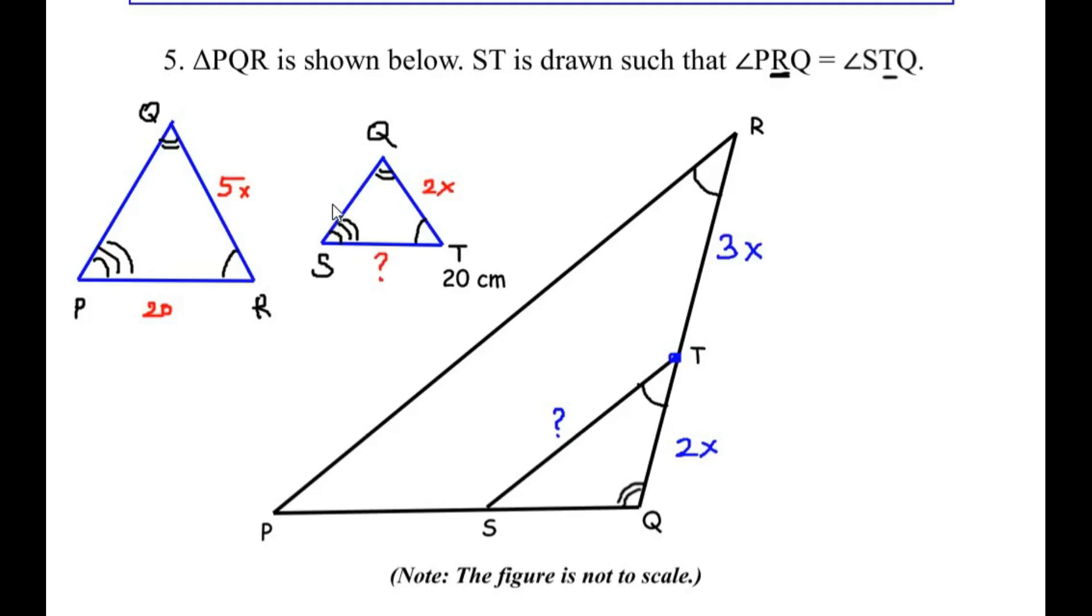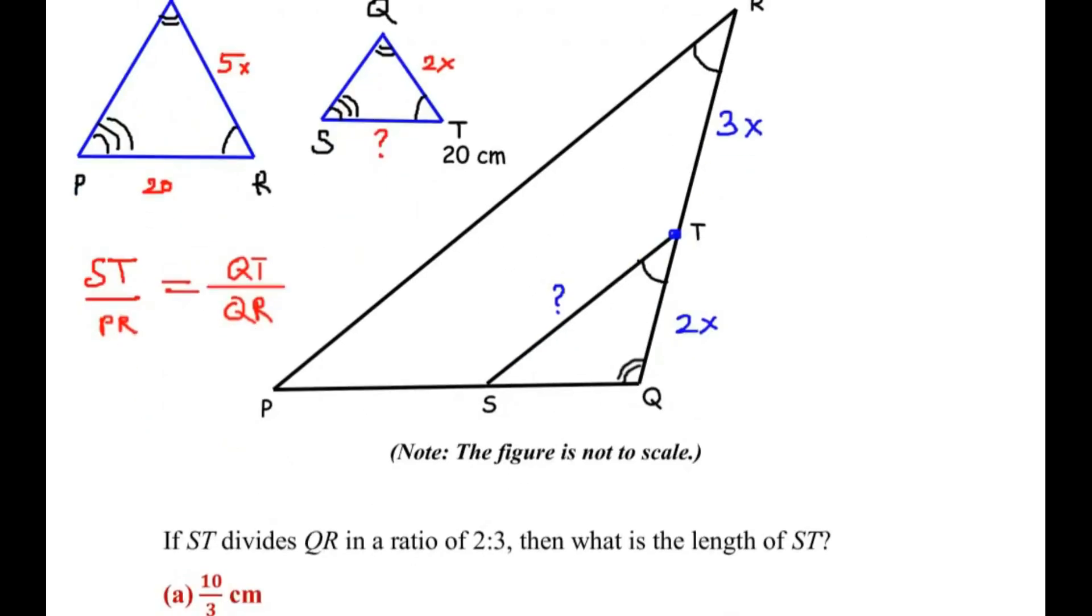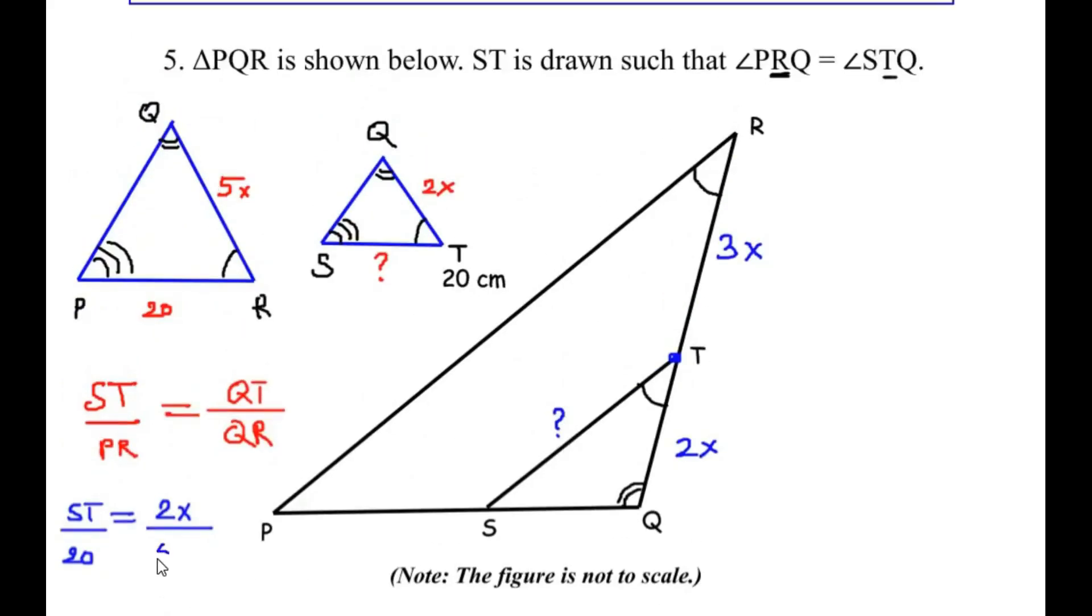Now since the two triangles are similar their corresponding sides are proportional. So I am going to write ST over PR. ST divided by PR is equal to QT from the triangle SQT divided by its corresponding side QR. Now ST is the one which we need to find out. So let us write down ST divided by PR is 20 is equal to QT was 2X. So let us write here 2X over QR. So QR was 5X.